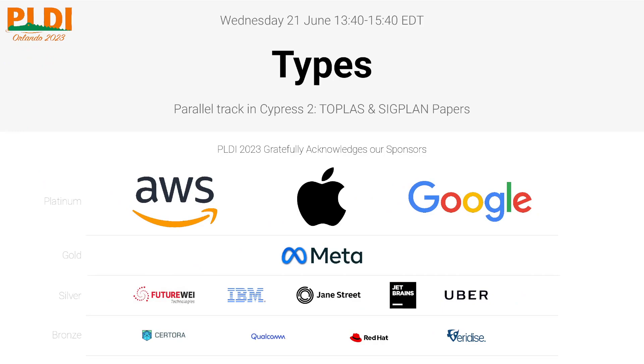So our next speaker will be Nico Lehmann. He's going to be talking about this language you might have heard of called Rust. It has this thing called types. Apparently its type system is quite nice and people like it, and he'll be telling us how to make Rust's type system even better.